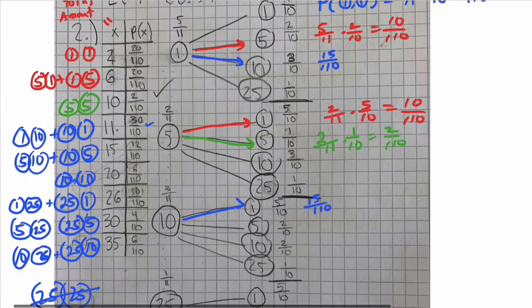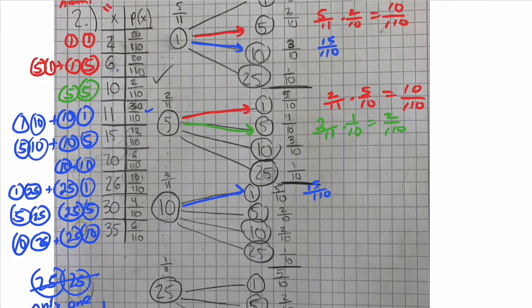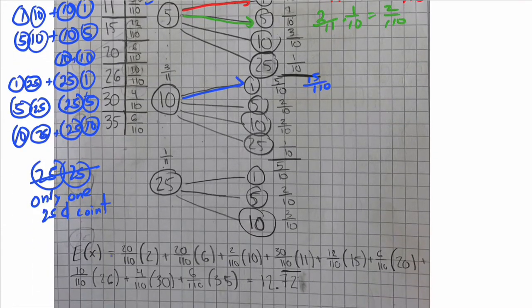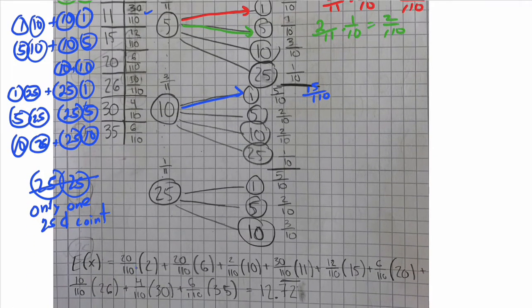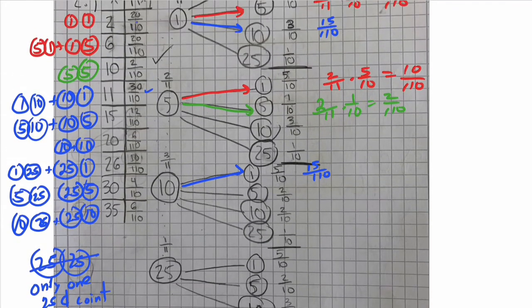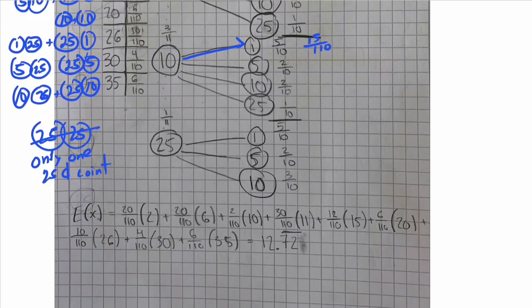Now to get the average amount of money that you pull out of this bag or this purse, you do the expected value, which is the probabilities times the amounts. So just multiply these together. Two times this fraction, six times this fraction, ten times that. So this whole calculation, if you add up all these probabilities, that will give you approximately, oh, that gives you exactly, I think it's exact. Or maybe. No, that's repeated.